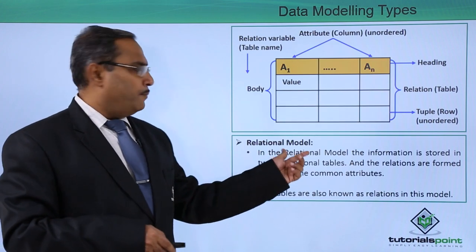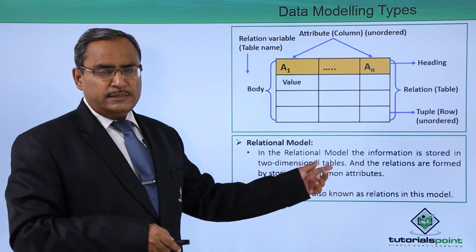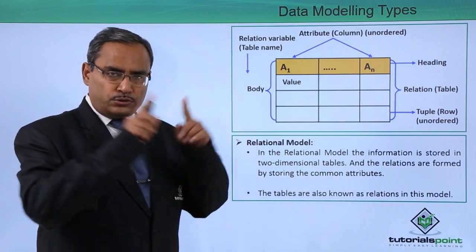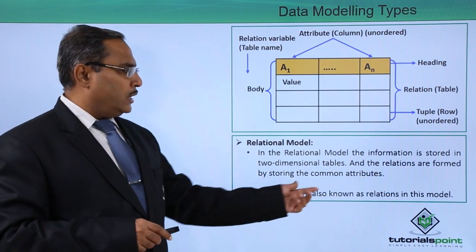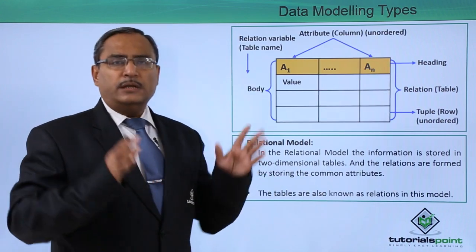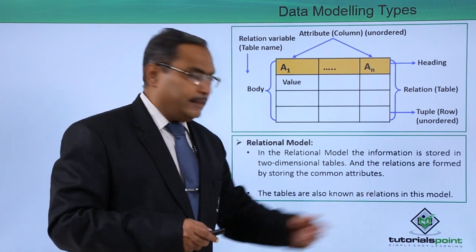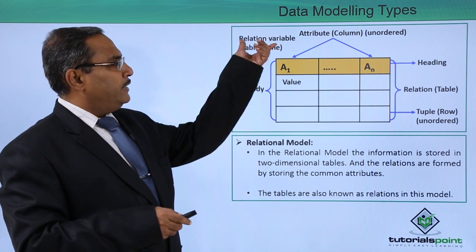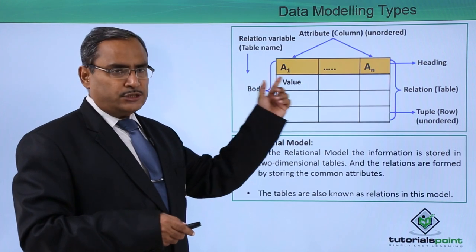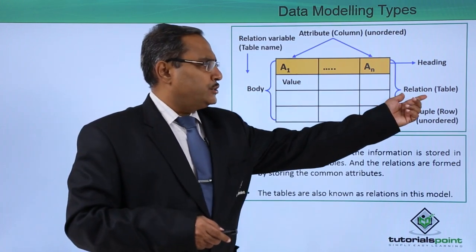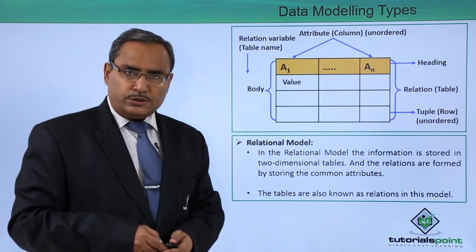Next is the relational model. In the relational model, the information is stored in two-dimensional tables — the table has certain columns and certain rows. Relations are formed by storing common attributes between two tables. The tables are also known as relations in this model. Values exist at the intersection of rows and columns, and tuples or rows are stored in an unordered way.